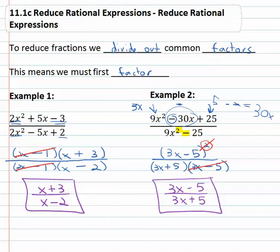So reducing rational expressions we simply have to factor the numerator and denominator so that we can divide out common factors.